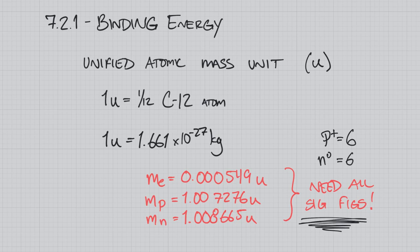Unit 7.2 is going to continue to look at nuclear chemistry, and what we're going to look at now is the concept of binding energy. The first thing we need to understand is what's called a unified atomic mass unit, which is U.